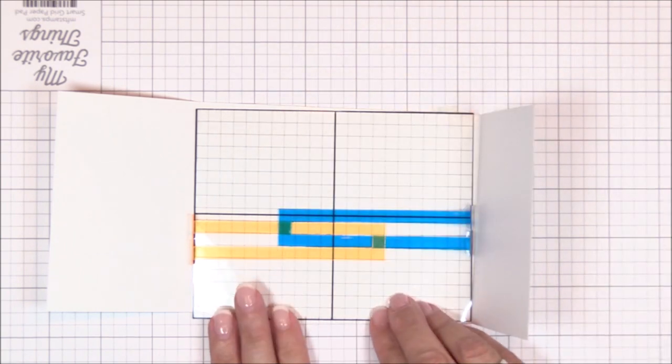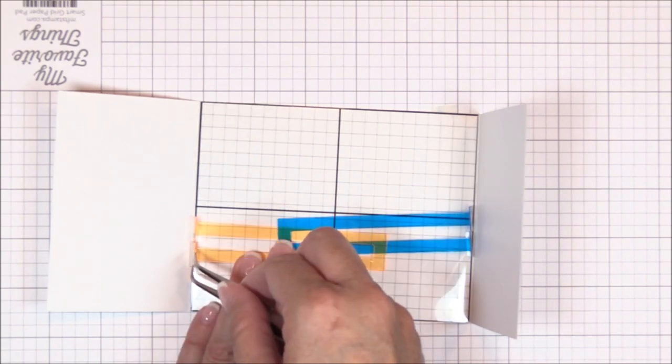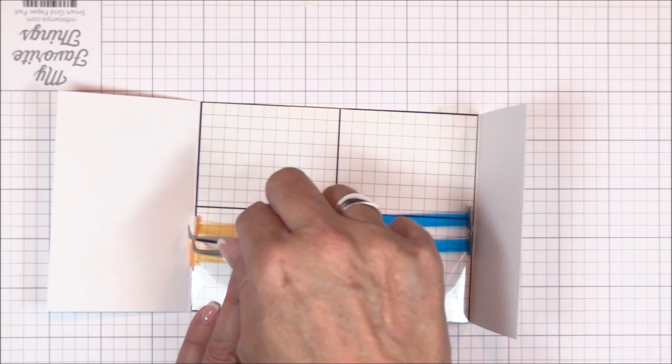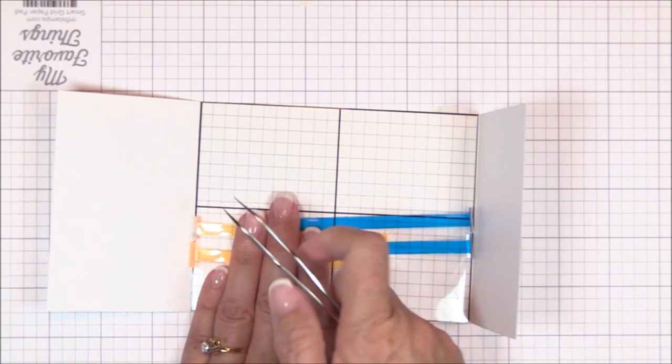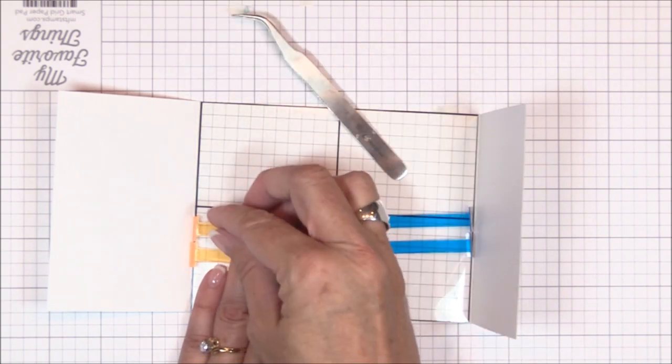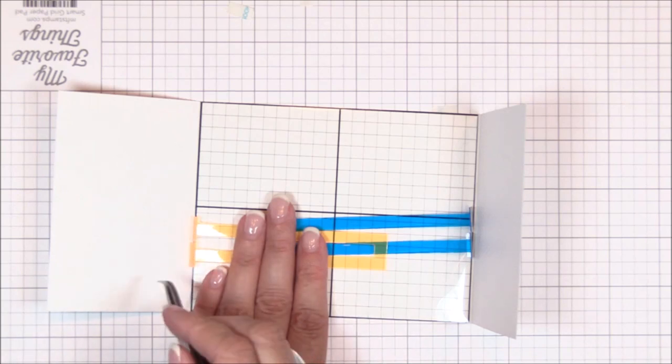You can see that I interlock the two die cuts by sliding one of the long tabs through the center opening of the other die cut so that the cuts are positioned with the tabs opposite of each other. Also, the blue die cut sits a quarter inch above the yellow die cut and is perfectly parallel to the yellow die cut. This parallel placement is critical to the mechanism working properly.